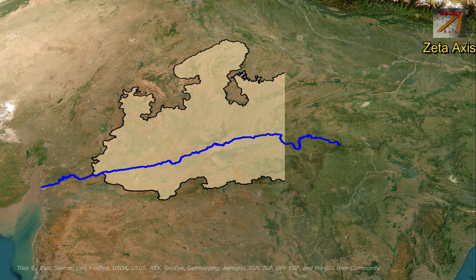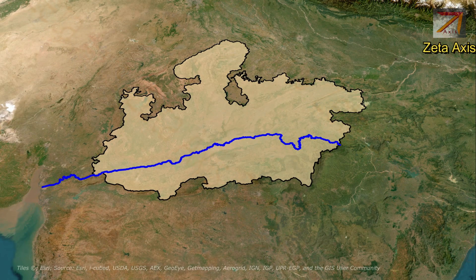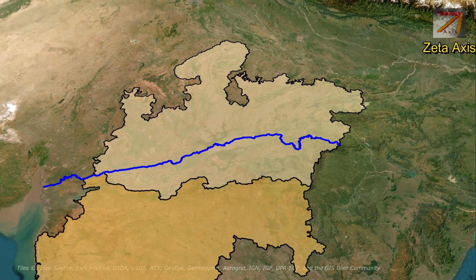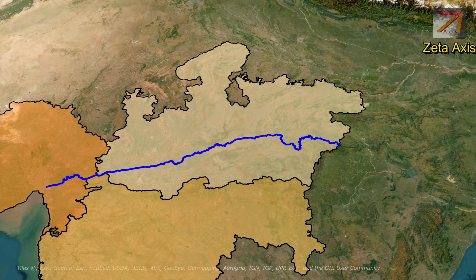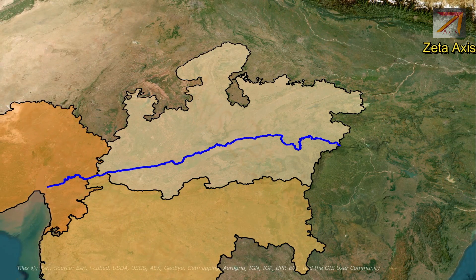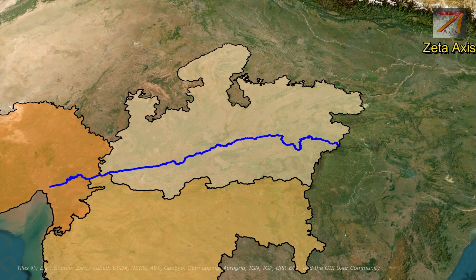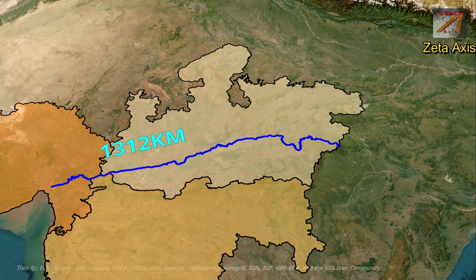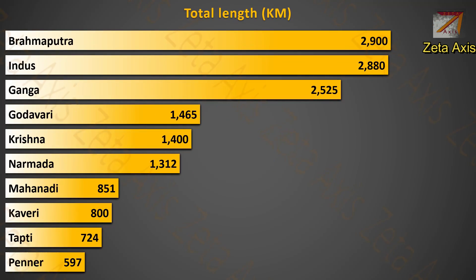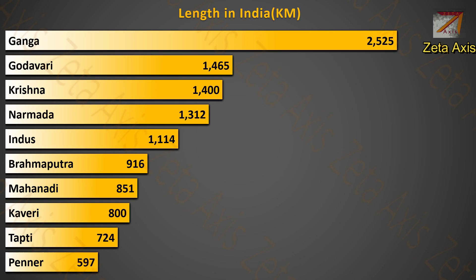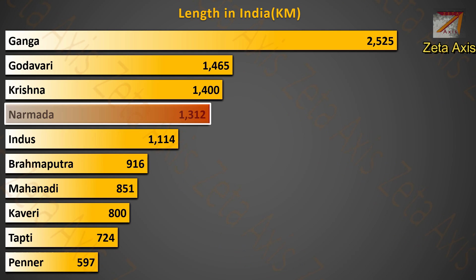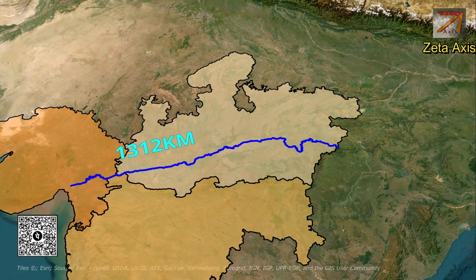The Narmada River originates in Madhya Pradesh, flows through the boundary of Maharashtra, and enters Gujarat where it flows into the Arabian Sea. The total length of Narmada River is 1,312 km, making it the sixth longest river flowing through Indian territory according to WRIS data, and the fourth longest river flowing entirely within Indian territory.